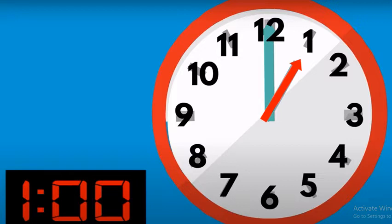The first thing I want you to look at is the short arrow, the red one. What is it pointing at? It's pointing at number 1. Then it's 1 o'clock.